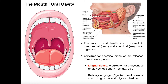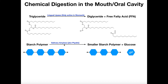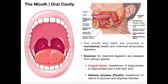In contrast to lingual lipase, salivary amylase is active in the oral cavity. What salivary amylase does is it catalyzes the breakdown of starch to glucose and oligosaccharides. Starch is a polymer of glucoses — thousands of glucoses bound together — and salivary amylase basically cleaves off glucose units one at a time, leaving us with a slightly smaller starch polymer and then glucose. The nice thing is that glucose can actually be absorbed into the blood; the tongue can actually absorb some of that glucose.